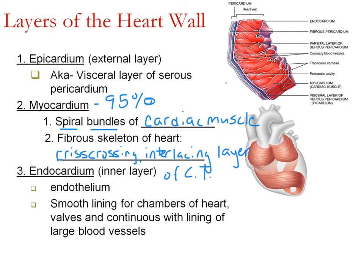You can see why it's called spiral bundles — they're wrapped around the chambers: the two atria and the ventricles down below. Finally, we have the endocardium — 'endo' means inner lining. This is the most deep layer, facing the lumen of the heart where the blood would be. It's a very smooth lining made of endothelium — simple squamous epithelium. Squamous is smooth so there's no extra turbulence. Endothelium lines the chambers of the heart and all of the vessels of the body to allow a smooth flow of blood.